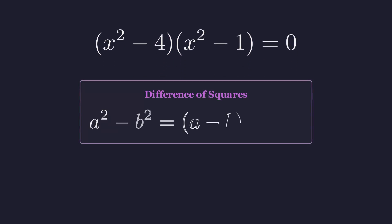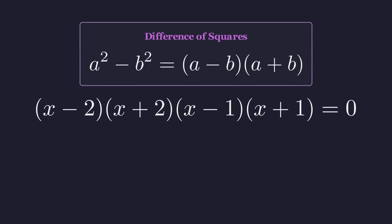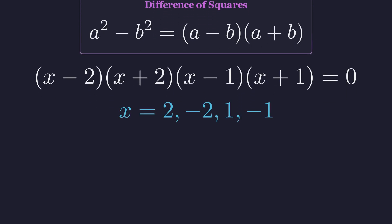Now notice that both of these factors are a difference of squares, which can be factored further. x squared minus 4 becomes x minus 2 times x plus 2, and x squared minus 1 becomes x minus 1 times x plus 1. From this fully factored form, we can see the solutions immediately. Setting each factor to 0 gives us the same four solutions we found before.